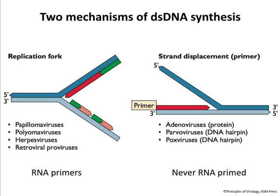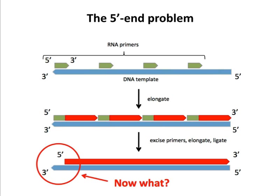The other kind of DNA synthesis is strand displacement — basically copying one strand while the other is being displaced. The other strand is not being copied right now; it might be copied later. That's why it's called strand displacement. Adenoviruses, parvoviruses, and poxviruses do that. It's never primed with an RNA — it's always some kind of DNA or DNA-protein primer. For adeno it's a protein linked to DNA; for parvoviruses and poxviruses it's a DNA hairpin.